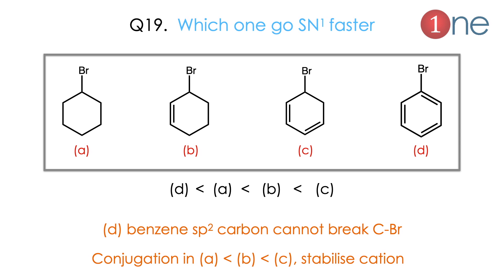Next: which undergoes SN1 faster among A (alkyl bromide), B (alkenyl bromide), C (dienyl bromide), and D (bromobenzene)? You might quickly say D is fastest, but the bromine–carbon double bond in bromobenzene is very strong, so D is actually the least reactive. After losing bromine, cation stability determines reactivity. C has two conjugated double bonds giving greater cation stability, B has one double bond, and A has none. So the order is C > B > A > D.